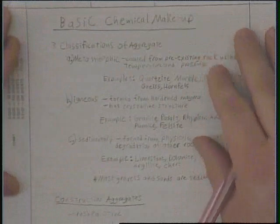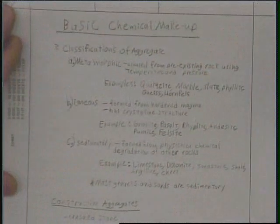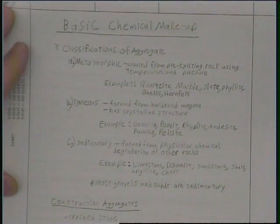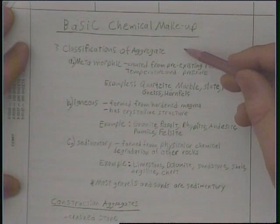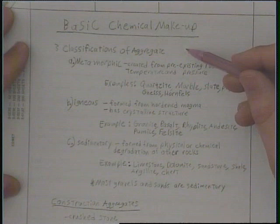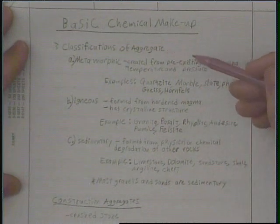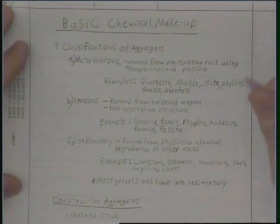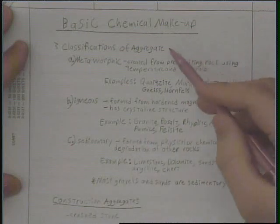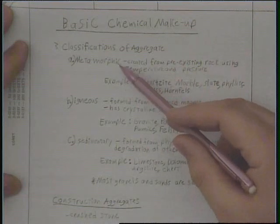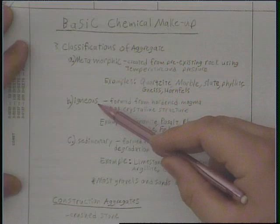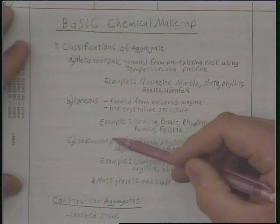Let's talk first about chemical makeup. Going back to geology class, there are three basic classifications for aggregate: metamorphic, igneous, and sedimentary.